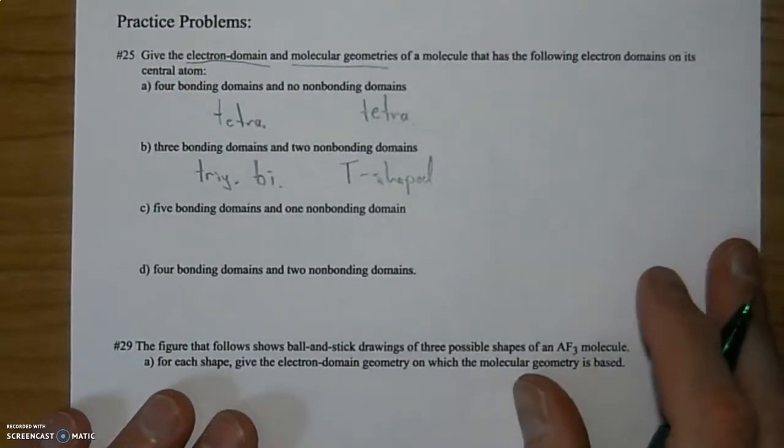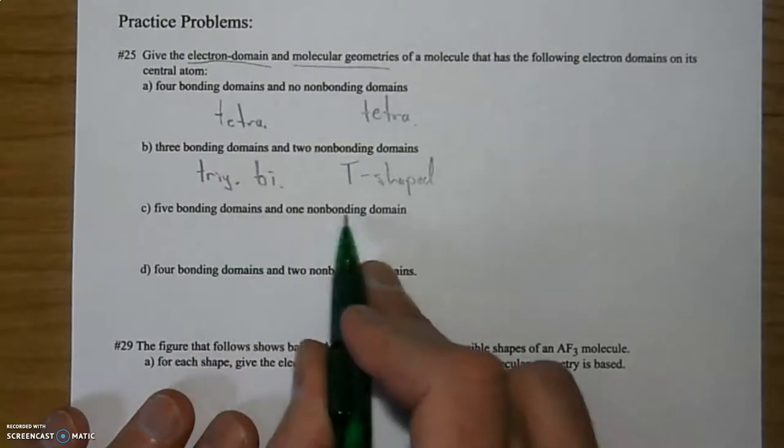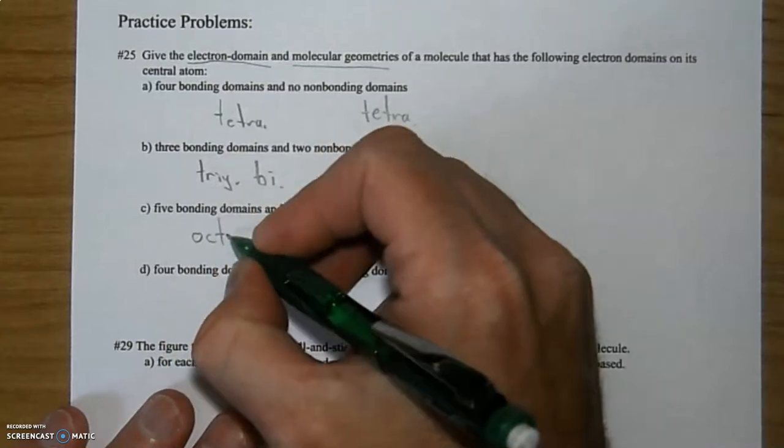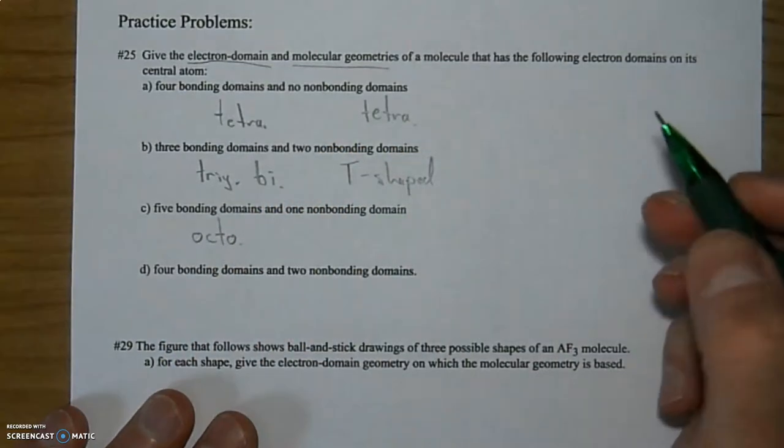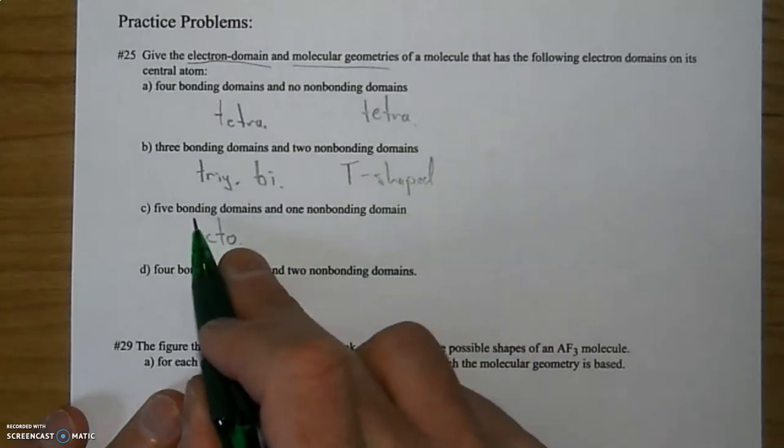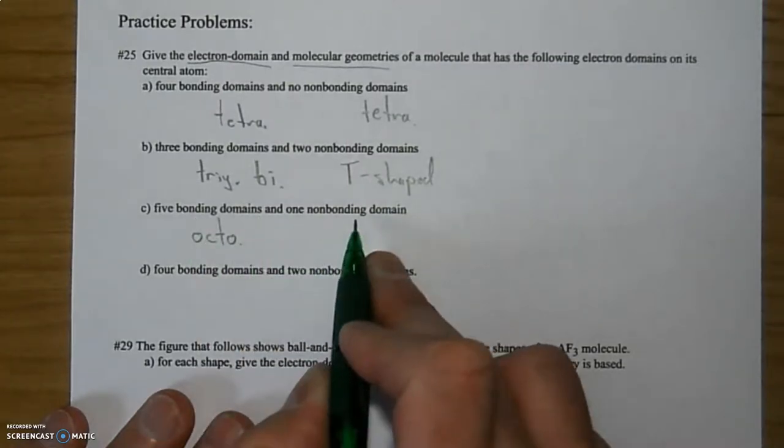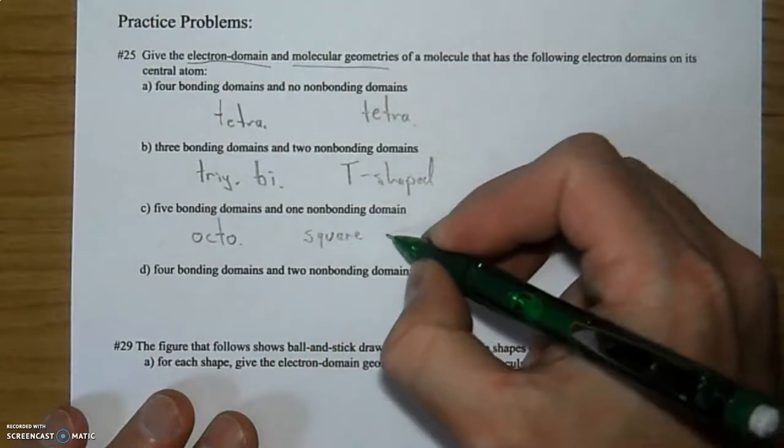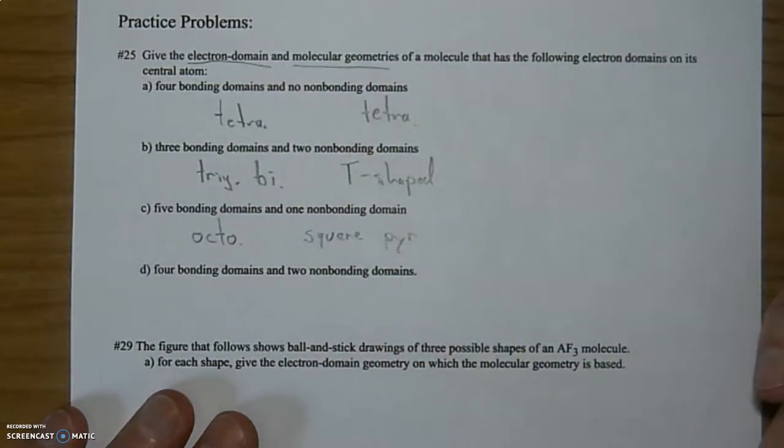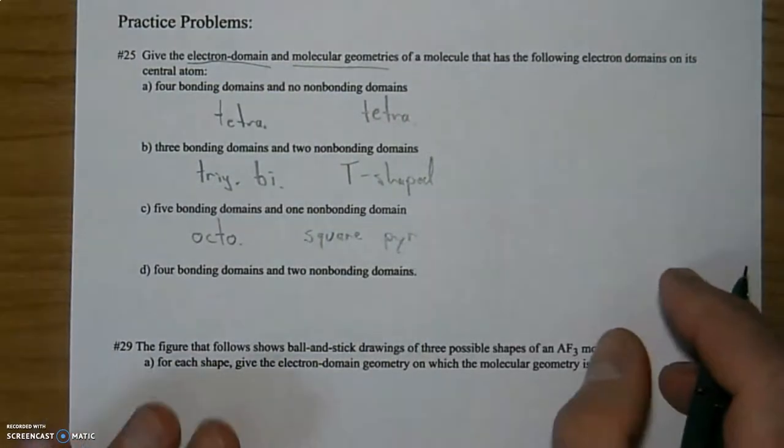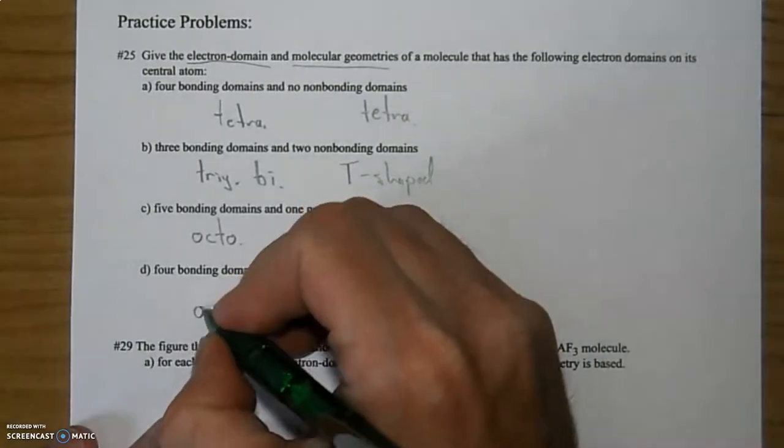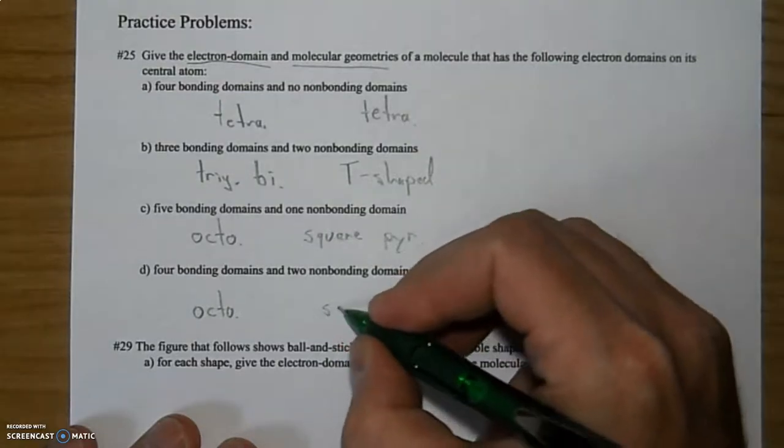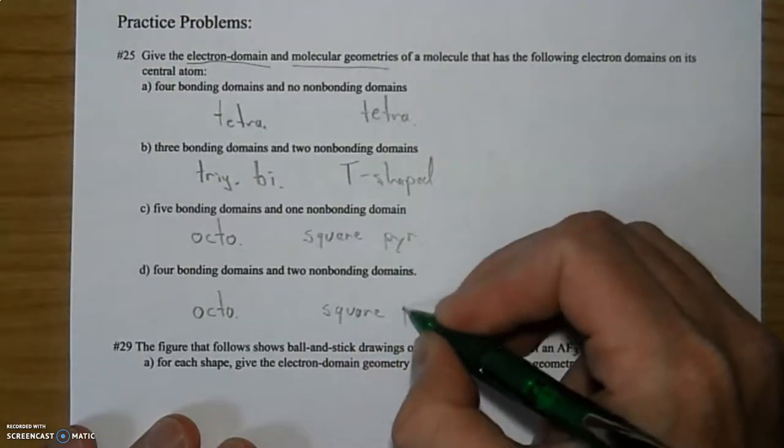Keeping this conversation going, five bonding and one non-bonding, six total, that's octahedral. And for the fact that it is five bonding and one non-bonding, that is square pyramidal. And the last one, four and two, again is still a total of six, so octahedral, but in this case it is going to be square planar. There you go, 25 is done.